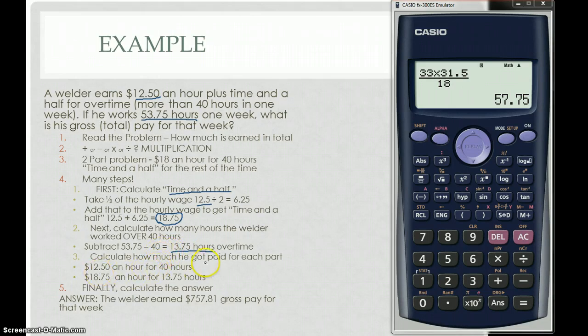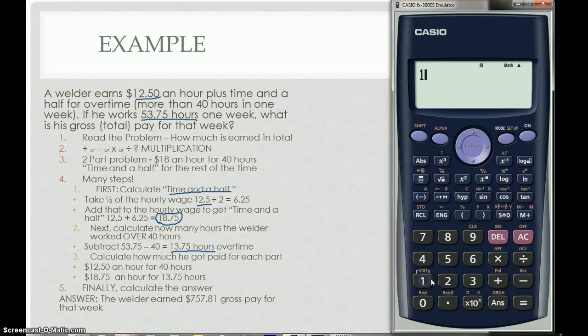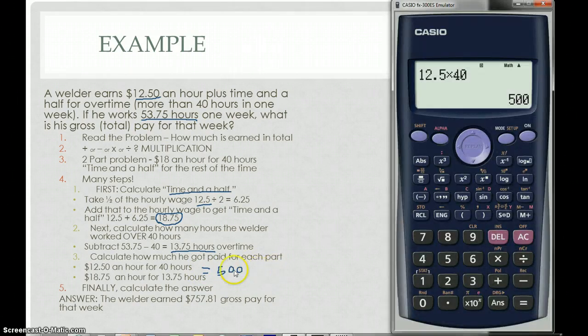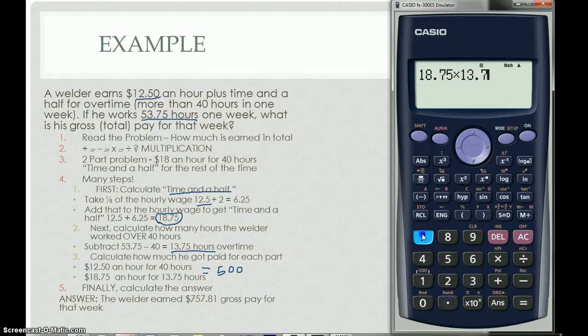So now I do two multiplication problems. I take how much he gets paid per hour at the regular rate, $12.50 times 40. That's my first multiplication problem. That equals 500. And then I take the second one, which is how much he makes in overtime, $18.75, and I multiply that by how many hours he worked in overtime, 13.75 hours. And that is, I have to round it. So I'm going to just keep that number there for now, $257.8125. So I add that to the 500.